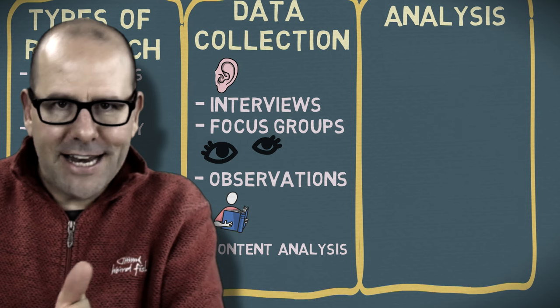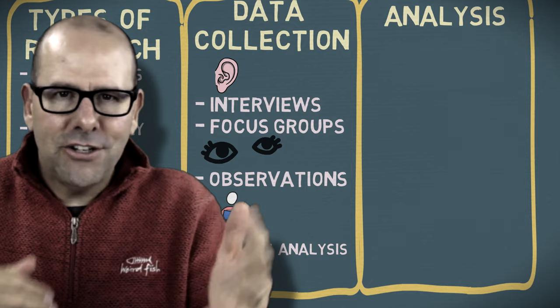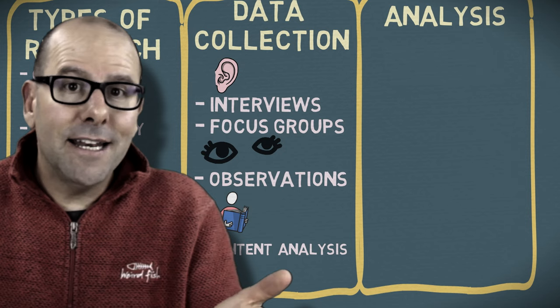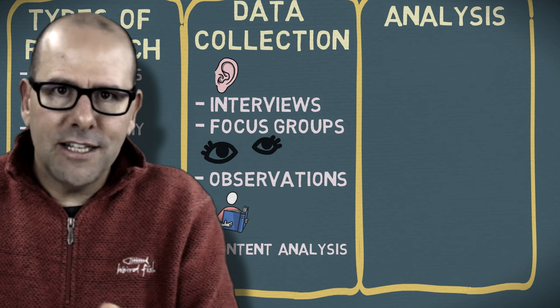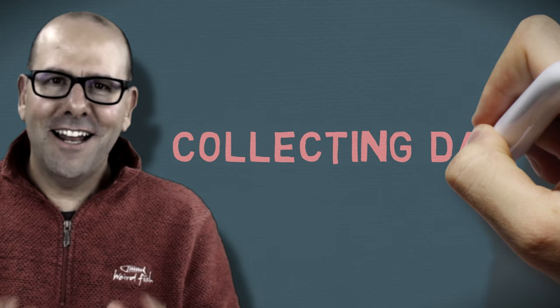Document or content analysis covers any recorded communication that can be analyzed. You might also use more than one source of data — and that's often a very good thing. For example, you might do content analysis of documents to get facts and figures, then complement that with interview data to get people's thoughts and opinions. You can even mix in some quantitative research. The key point is to be transparent about your methodology so a reader understands how you got there and why you chose the sources of data you did.